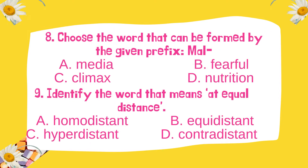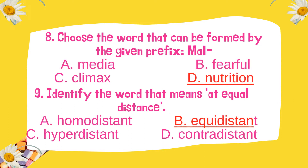Number 8: Choose the word that can be formed by the given prefix 'mal.' Number 9: Identify the word that means at equal distance. The correct answer for number 8 is malnutrition — the answer is nutrition. For number 9, at equal distance means letter B, equidistant.